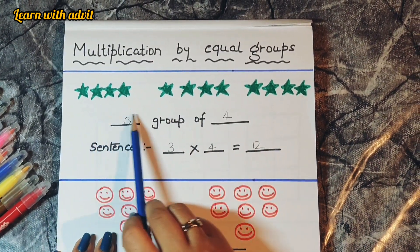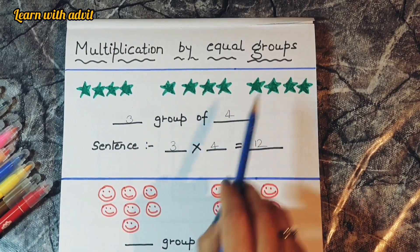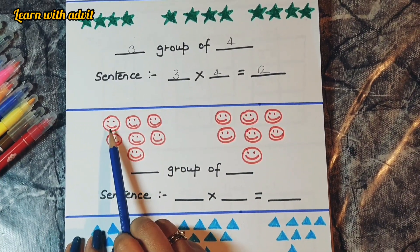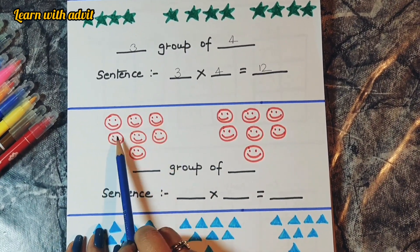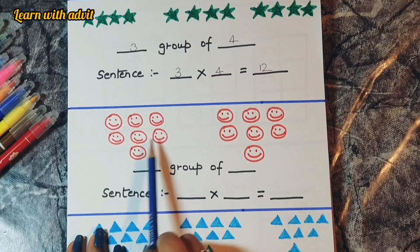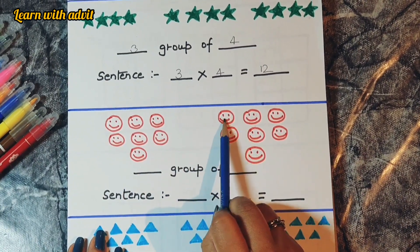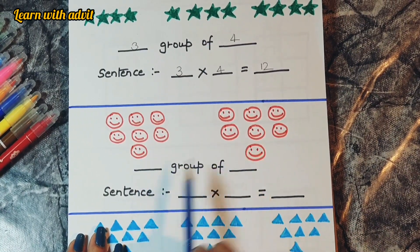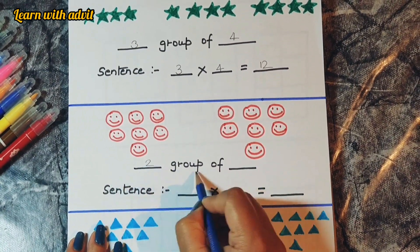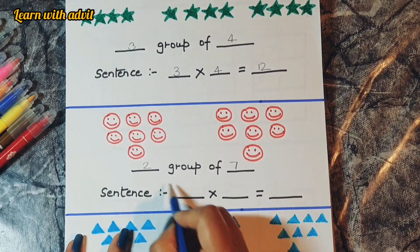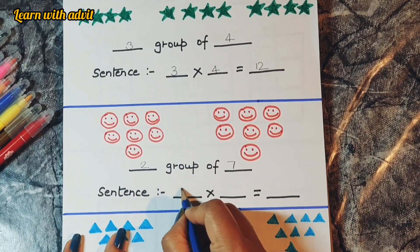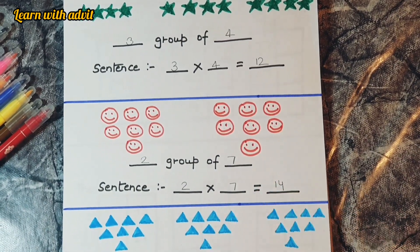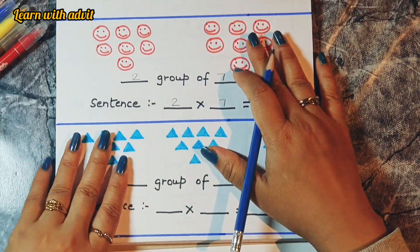It's easy to learn multiplication by equal groups. Here we have two groups — kids need to count the smileys: one, two, three, four, five, six, seven in each group. So they write two groups of seven smileys, and for the multiplication sentence: two into seven equals fourteen.